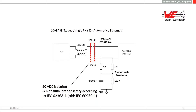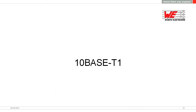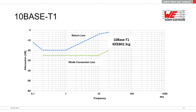For automotive Ethernet, 50 V isolation is fine because users cannot touch the inner system. But in industry we need 1500 V. So our question was: what can we do? We made thoughts about how to create the perfect design for 10BaseT1, 100BaseT1, and also 1000BaseT1. In the next slides you will see the results.